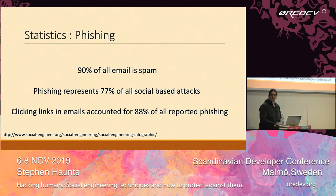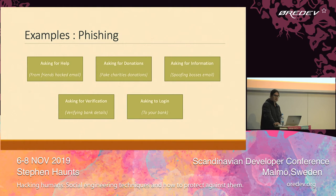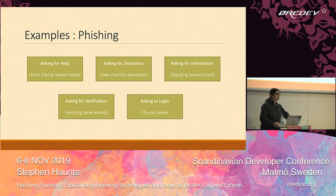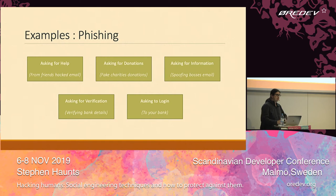Clicking links in emails accounts for about 88% of all reported phishing attacks. Phishing generally falls into different categories: asking for help — like the Nigerian prince wanting to pass money to you; asking for donations for fake charities, which unfortunately happens a lot after natural disasters; asking for information, which can be targeted towards CEOs; and asking for verification — trying to get your banking details by sending an email that looks like it's from your bank, getting you to log in so they can use those credentials illicitly.